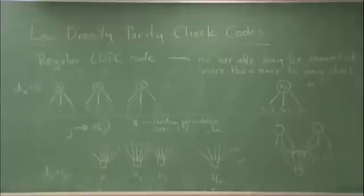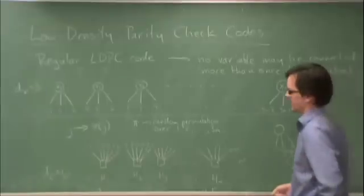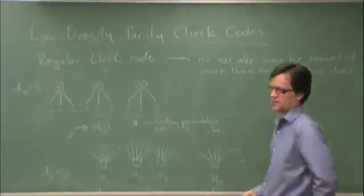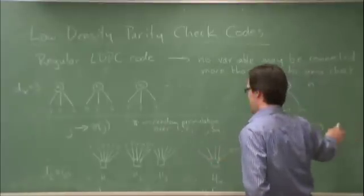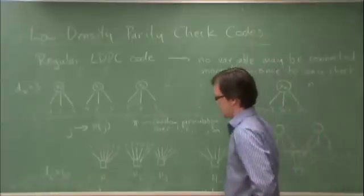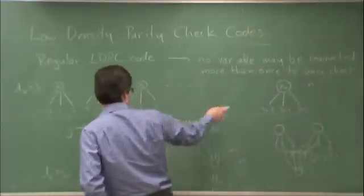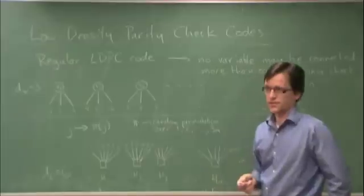What this does, if n is sufficiently large, is ensure that most of the cycles are fairly long. If everything is connected in completely random order, and let's say n is a billion or something.